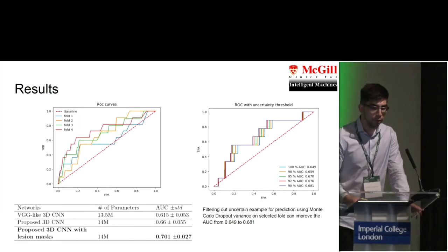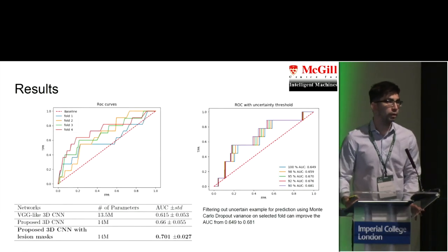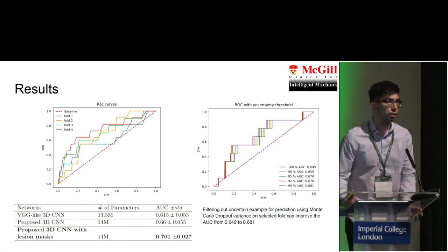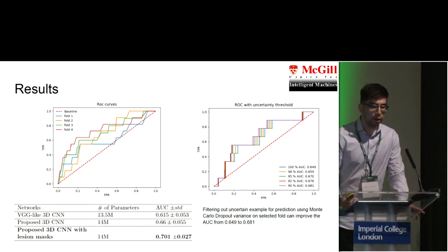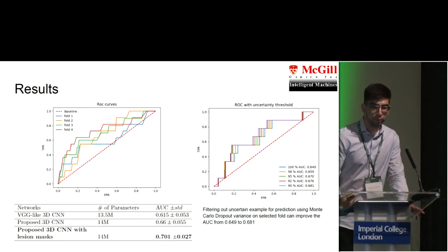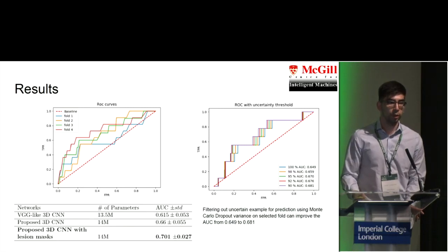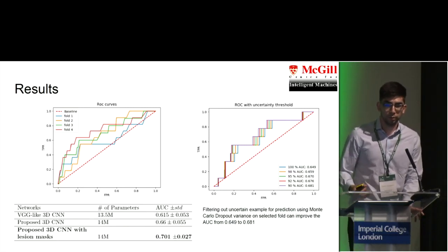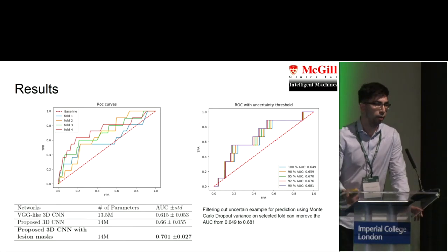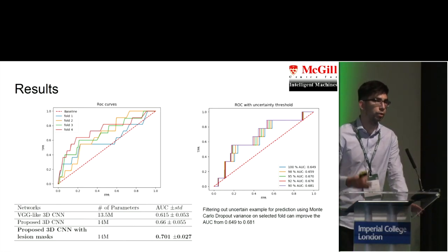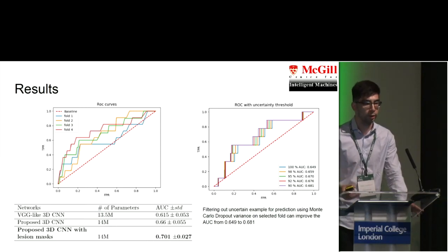We show that our model significantly outperforms a standard VGG-like 3D CNN on the ROC curve using four-fold cross-validation. We also show how filtering out uncertain examples from the ROC calculation improves the results, validating our use of the uncertainty metric by showing a correlation between uncertain examples and incorrect predictions.